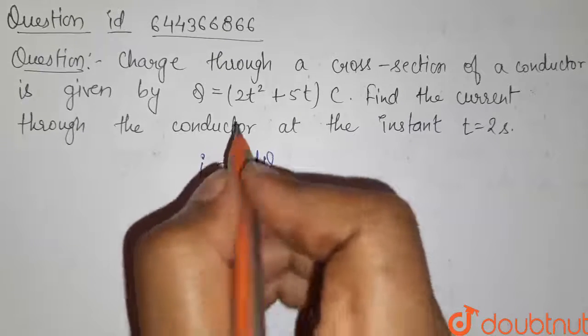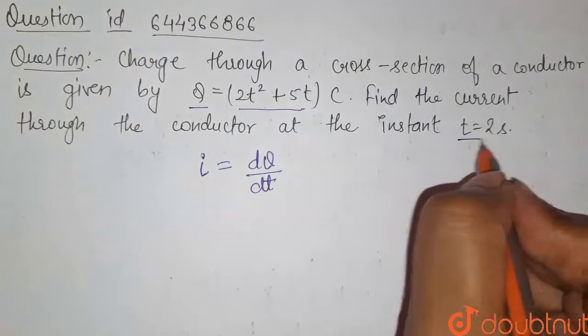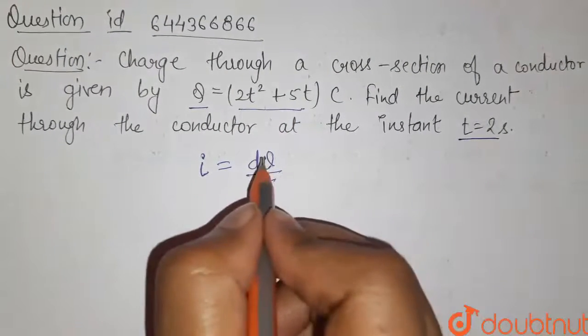So here we have to differentiate this given charge with respect to t and put the value of t equals to 2, then we will get the current through it.